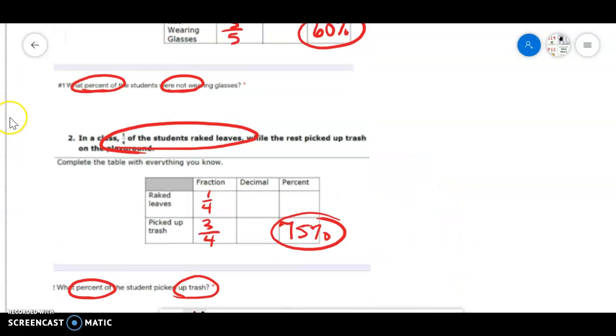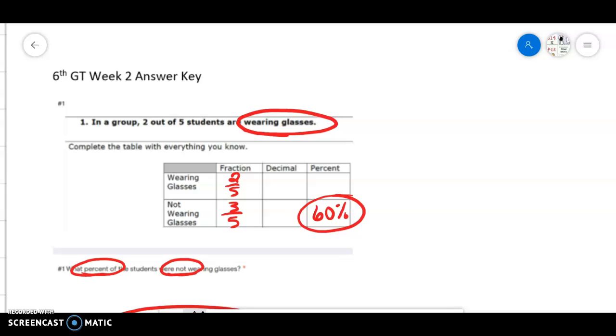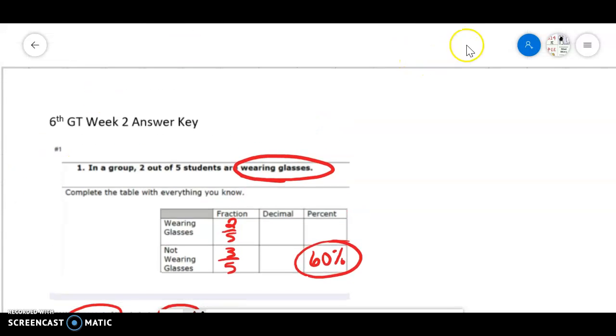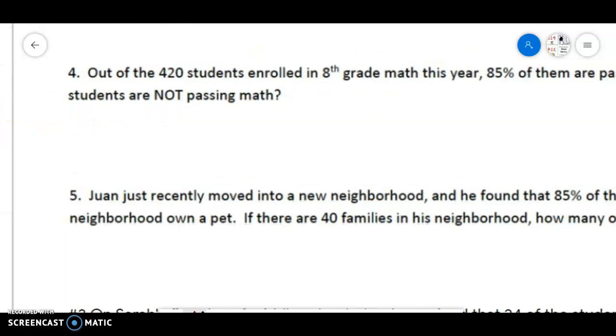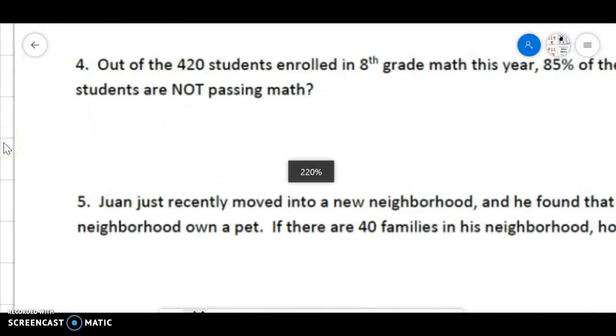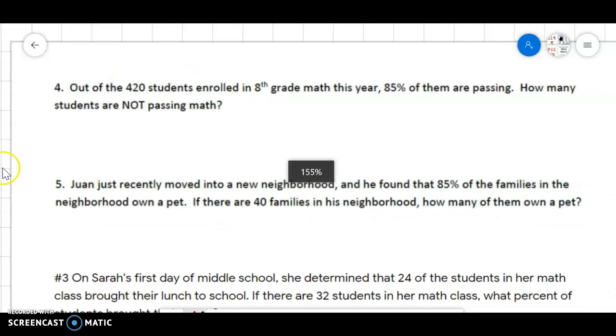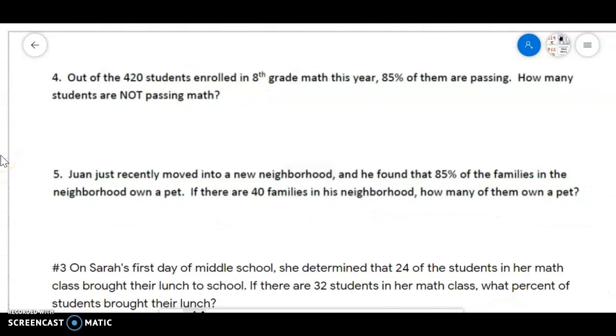So now we're going to go back and we'll look at day two or assignment two. I had taken these off of another paper, which is why it says four here when it was, in fact, number one. Out of 420 students enrolled in eighth grade math this year, 85% are passing. So this is, again, what is not passing? So we know that this is our whole.